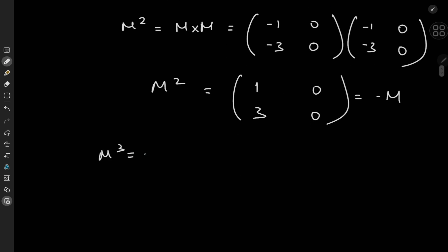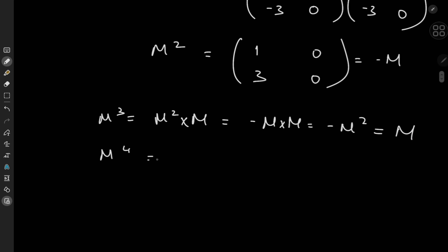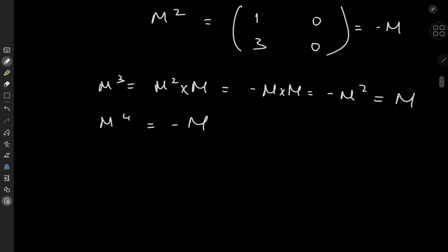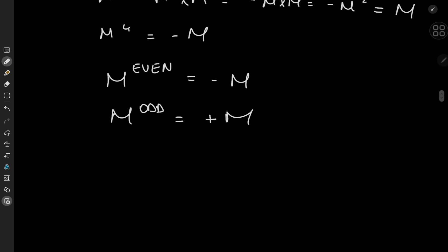Using this, we can decipher higher powers. M cubed equals M squared times M, and M squared is just negative M, so we get negative M times M = negative M squared = M. Similarly, M to the fourth equals negative M. So we conclude: M to an even power equals negative M, and M to an odd power equals positive M. In general, M to the k equals (-1)^(k-1) times M.